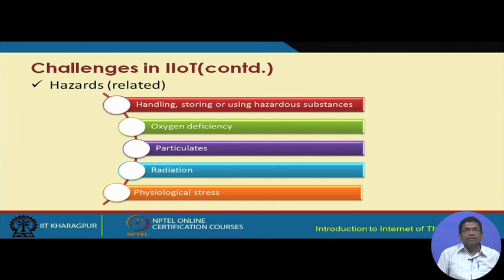There are different hazards as well: handling and storing hazardous substances, oxygen deficiency, particulate matters such as fly ash, different types of radiation including electromagnetic radiation, and physiological stress. All these are different types of hazards that have to be taken into consideration when addressing challenges through the use of IIoT.